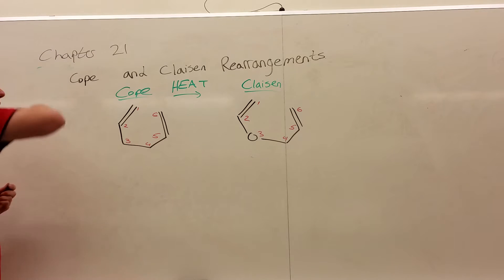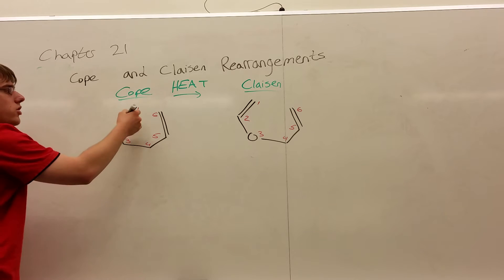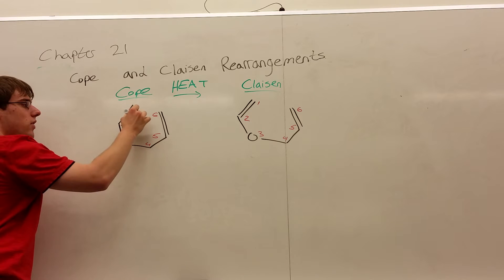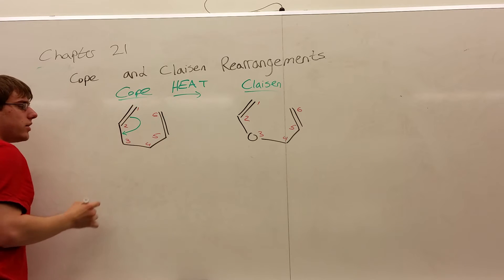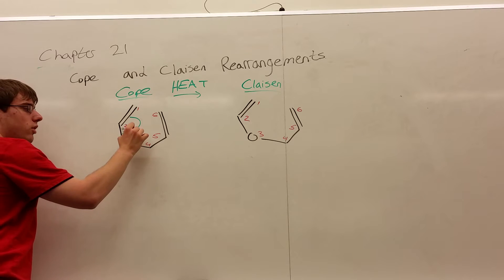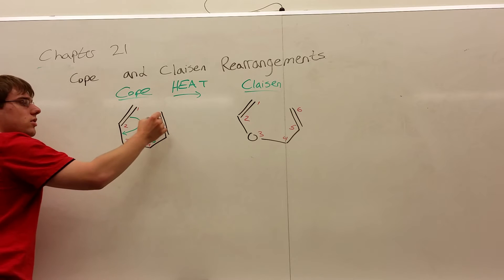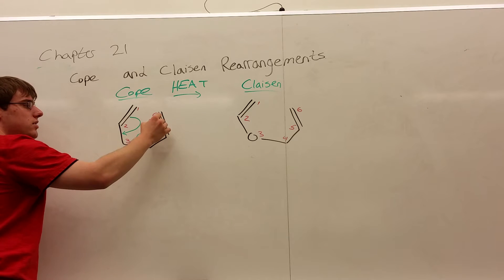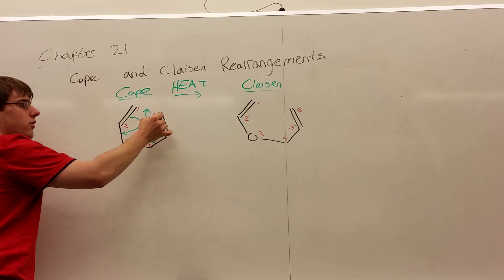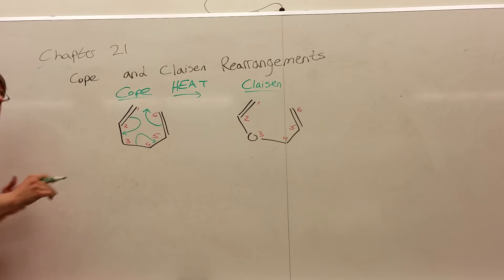So let's start by drawing our arrows. What are the mechanistic arrows of this rearrangement? Start from the double bond between one and two, and draw to the bond between two and three. Next, draw an arrow starting from the bond between three and four, and draw that to the bond between four and five. Finally, start from the bond between five and six, and you can either draw it to the space between one and six, or draw it from the five and six bond directly to one. Both would be acceptable.